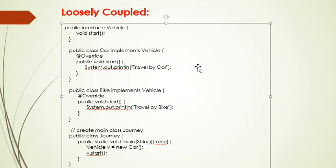Vehicle is an interface, and we can inject any of the implemented classes at runtime and provide services to the end user.